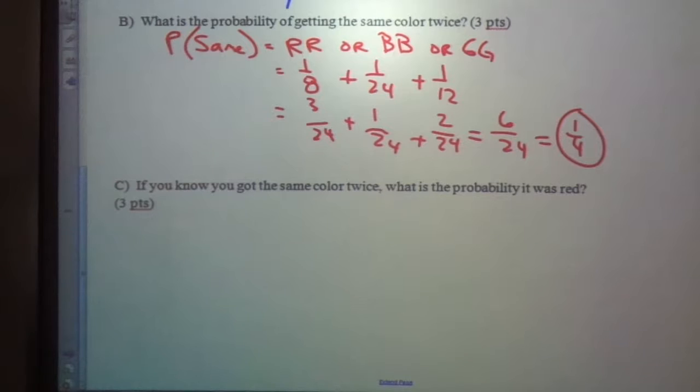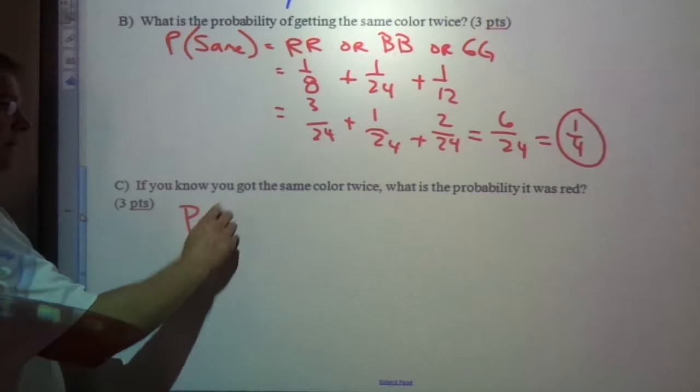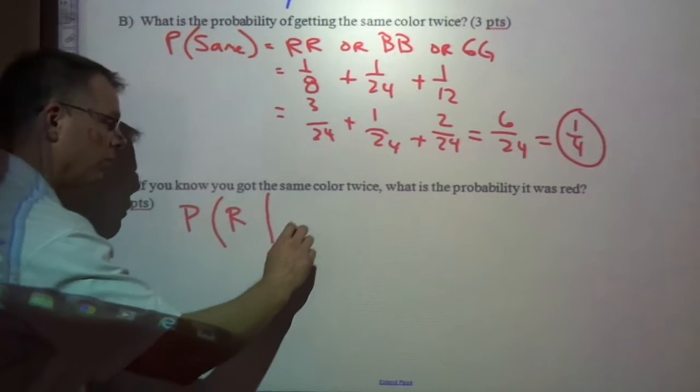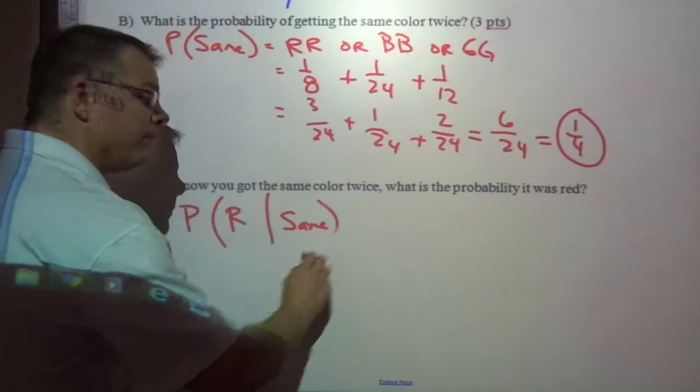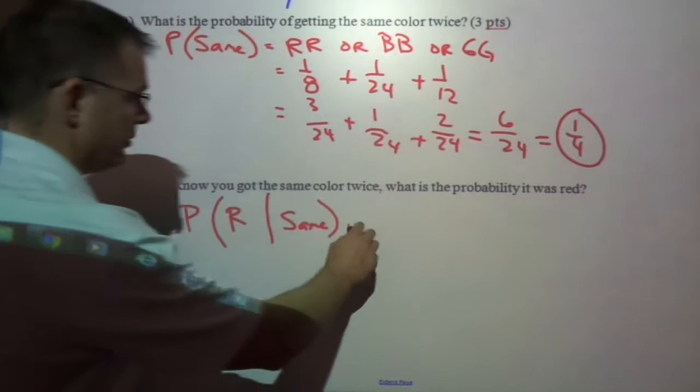Now this one's saying, if you know you got the same color twice, what's the probability it was red? So this is a conditional probability. This is asking, what's the probability if it's red, if you know that it's the same? Right?